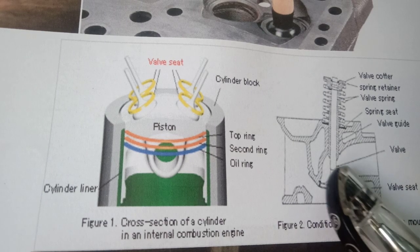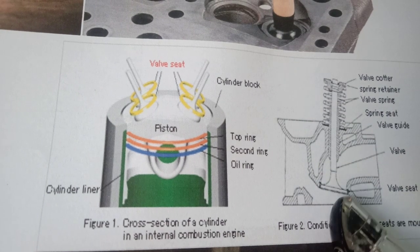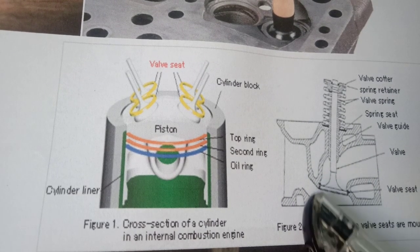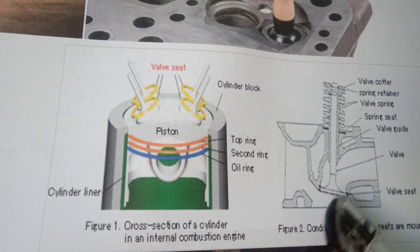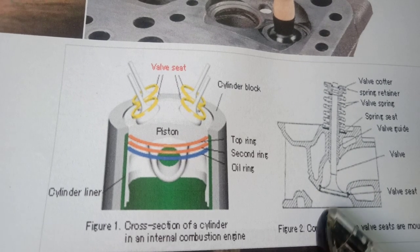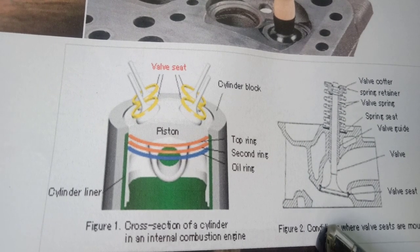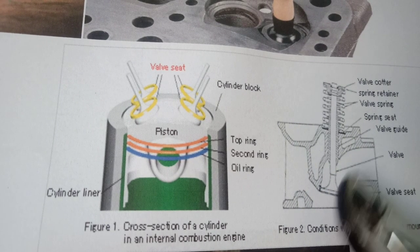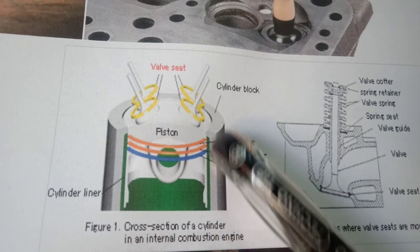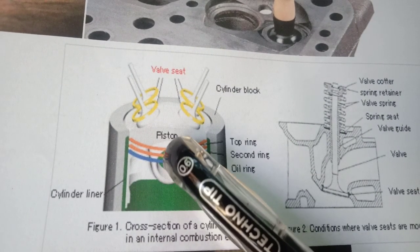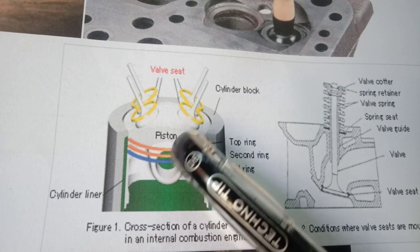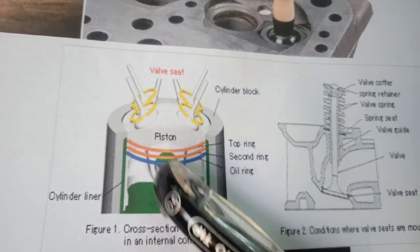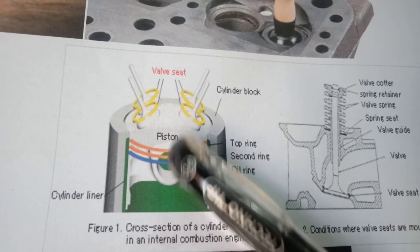The valve seat — where the valve is seated — wears out, and due to this there is a leakage of compression from the engine cylinder. Due to the leakage of compression, the overall pressure built up on the piston will be less, and there is a loss of efficiency of the engine — that is, a loss of power and loss of mileage.